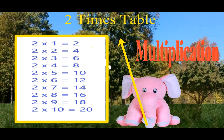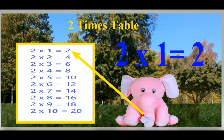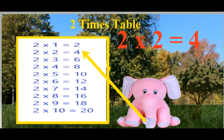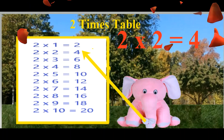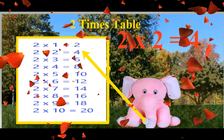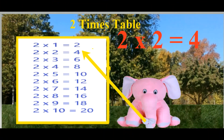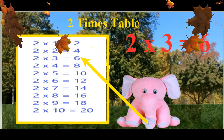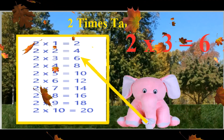2 table. 2 1's are 2. 2 2's are 4. 2 3's are 6.